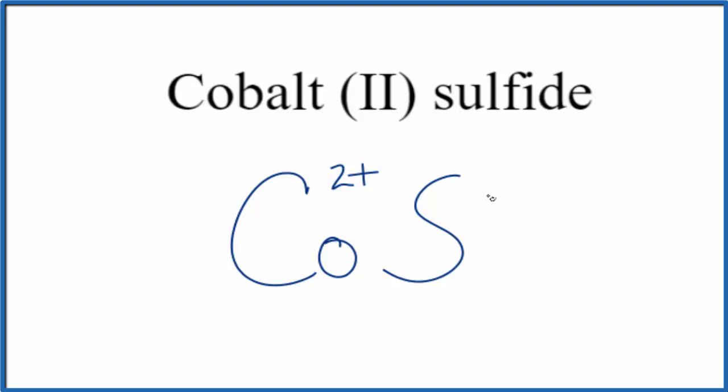Sulfur on the periodic table is in group 16, sometimes called 6A, and has a 2- ionic charge. So 2+ and 2- add up to zero. This is the formula for cobalt (II) sulfide: CoS. This is Dr. B, and thanks for watching.